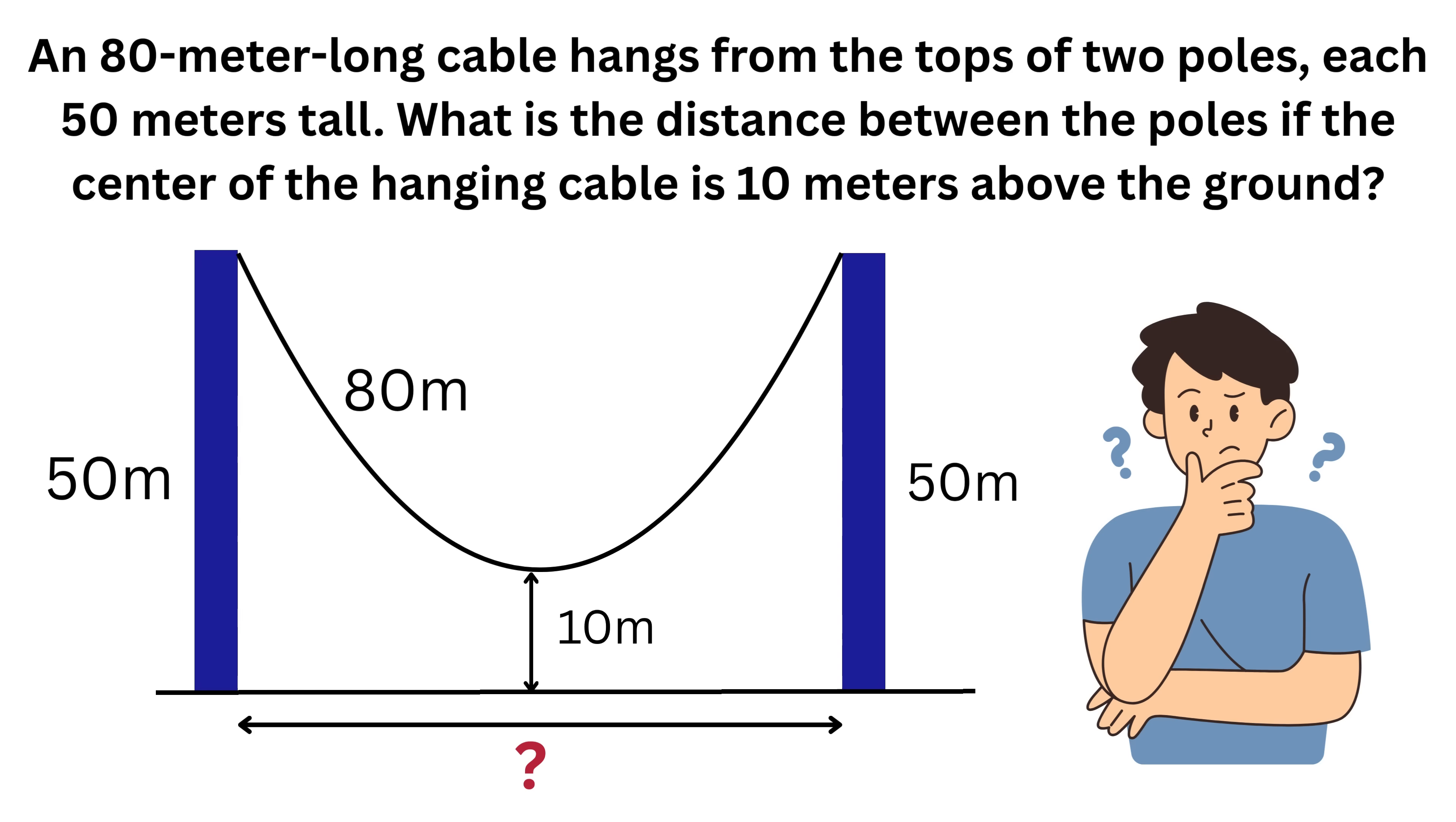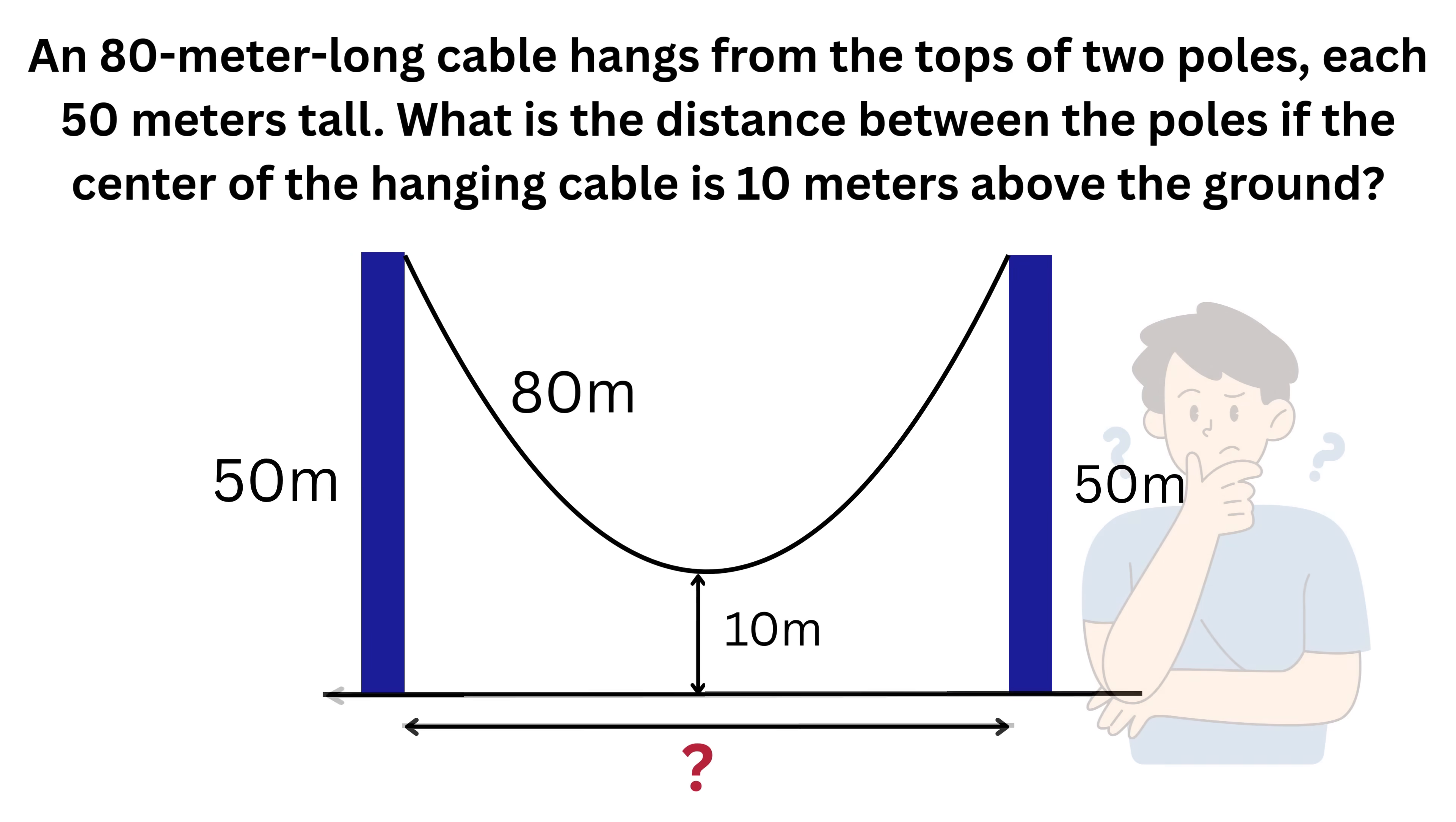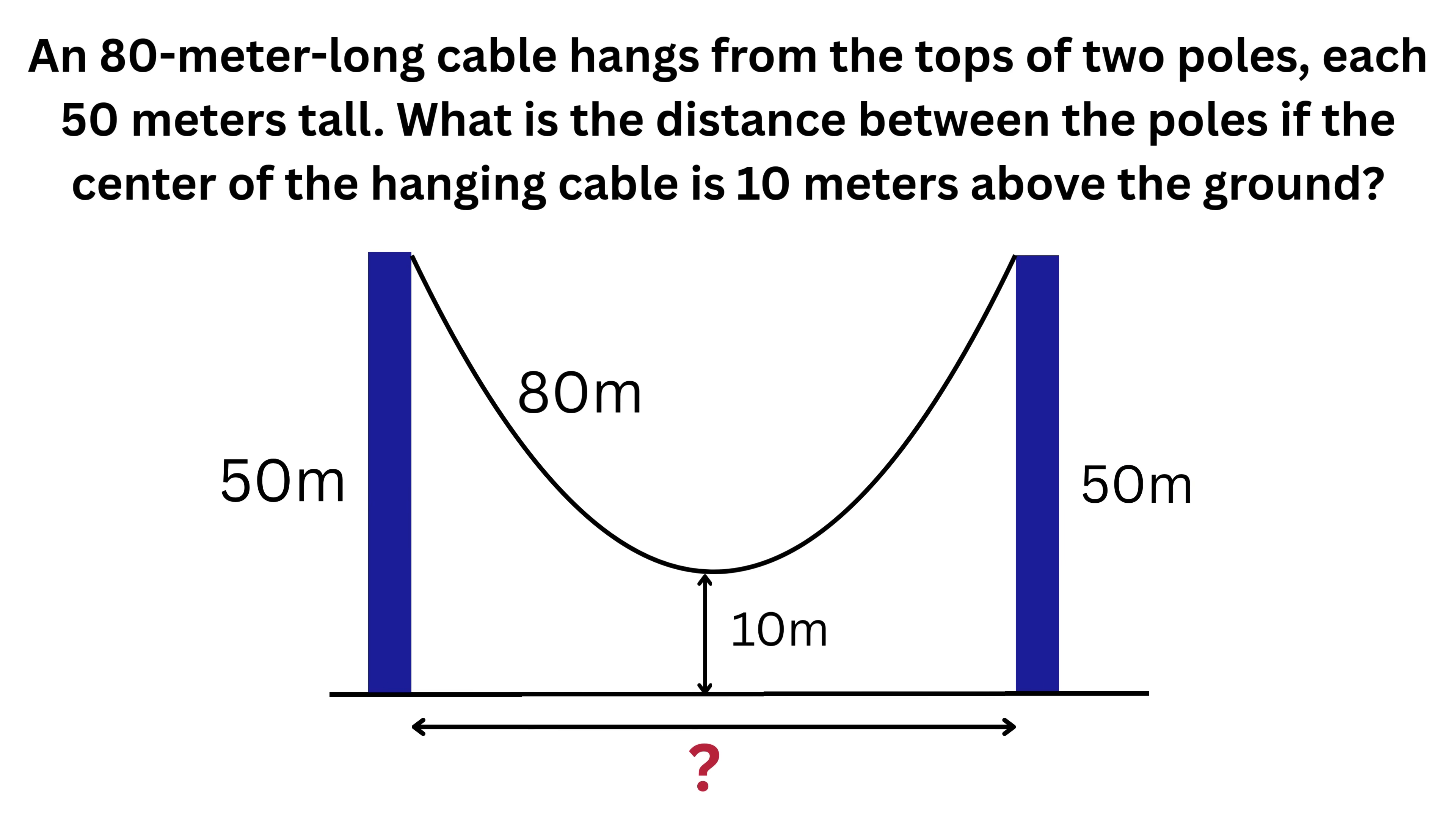You may be wondering, why is that? Well, let's see. The question says, if a cable 80 meters long hangs from the tops of two poles that are 50 meters tall, what is the distance between the two poles, given that the lowest point of the hanging cable is 10 meters from the ground?